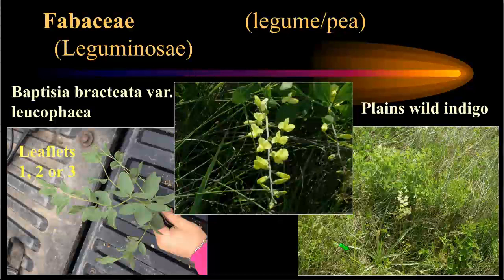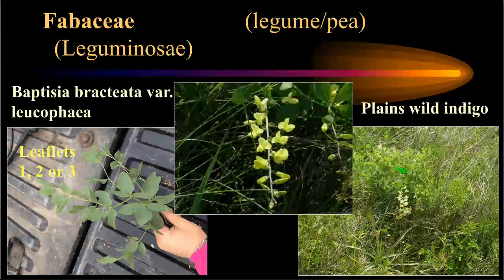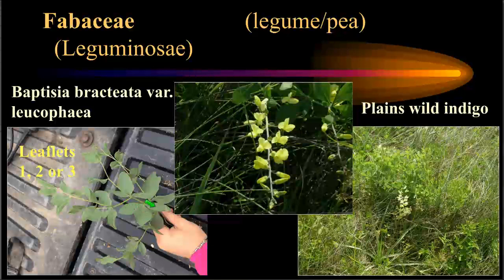The genus Baptisia, called wild indigo, is common in the eastern half of the state. The species Baptisia bracteata variety leucophaea, plains wild indigo, is notable because the flowers droop toward the ground, whereas other members of the genus have erect flowers. The flowers have a large bluebonnet-like appearance. The leaves are arranged in three leaflets, though going up the plant one may find two leaflets or occasionally a single terminal leaflet.